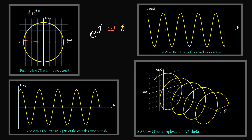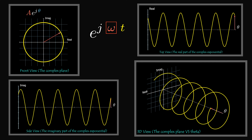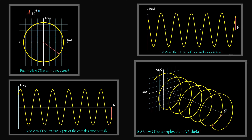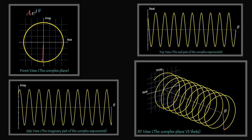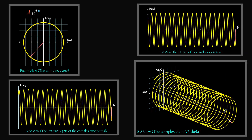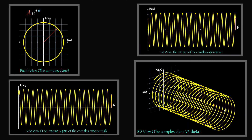The speed of rotation is determined by the angular frequency omega. As omega increases, the speed of rotation increases. Theta can also be a function of omega while time is constant, in which case the speed of rotation is determined by time.